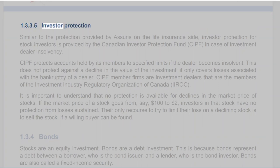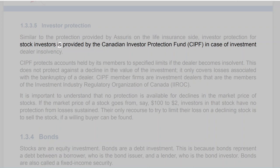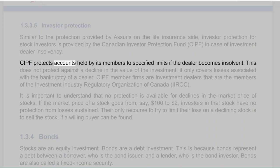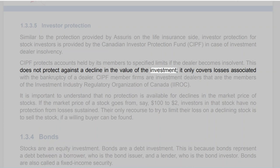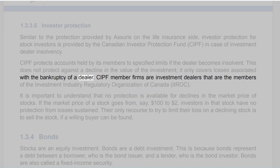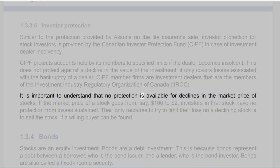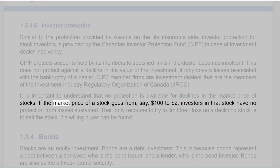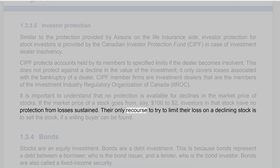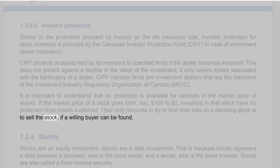Section 1.3.3.5: Investor Protection. Similar to the protection provided by Assuris on the life insurance side, investor protection for stock investors is provided by the Canadian Investor Protection Fund (CIPF) in case of investment dealer insolvency. CIPF protects accounts held by its members to specified limits if the dealer becomes insolvent, but does not protect against a decline in the value of the investment — only against losses associated with the bankruptcy of a dealer. CIPF member firms are investment dealers that are members of the Investment Industry Regulatory Organization of Canada (IIROC). If the market price of a stock goes from $100 to $2, investors in that stock have no protection from losses sustained. Their only recourse is to sell the stock if a willing buyer can be found.